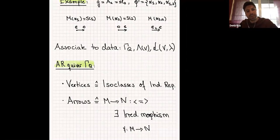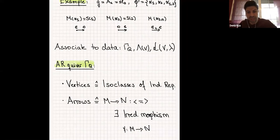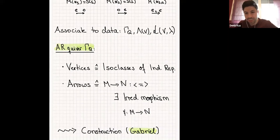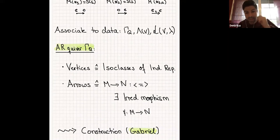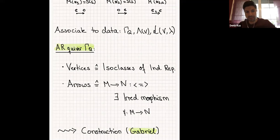This is the Auslander-Reiten quiver. Now, if you want to calculate it, you have to check whether there are irreducible morphisms. But there is a beautiful construction, which goes back to Gabriel, showing how one can construct from a given quiver Q the Auslander-Reiten quiver Γ(Q). This construction has three steps.